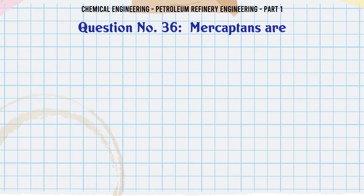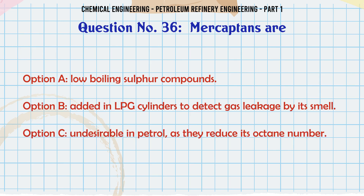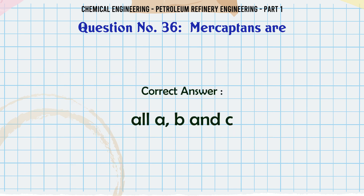Mercaptans are: A. Low boiling sulfur compounds, B. Added in LPG cylinders to detect gas leakage by their smell, C. Undesirable in petrol as they reduce its octane number, D. All A, B and C. The correct answer is All A, B and C.